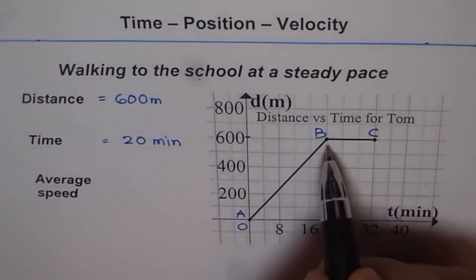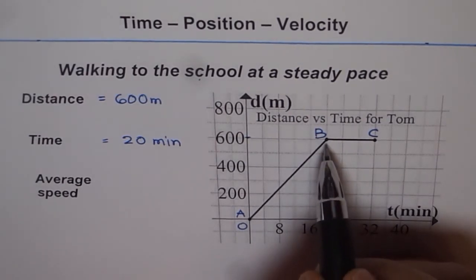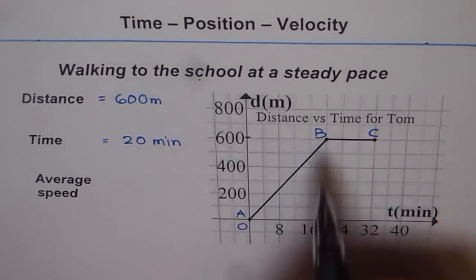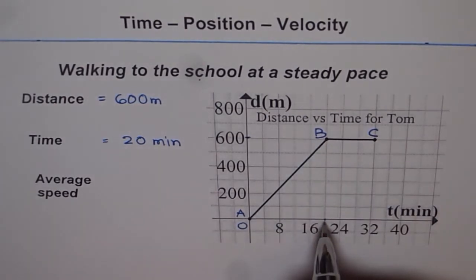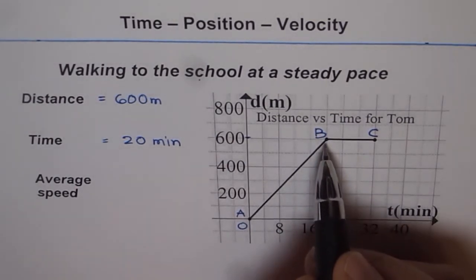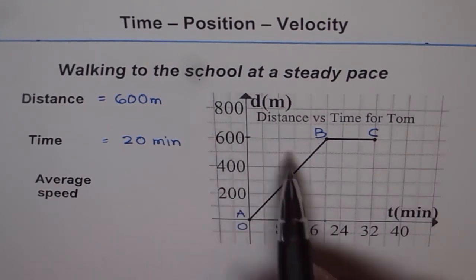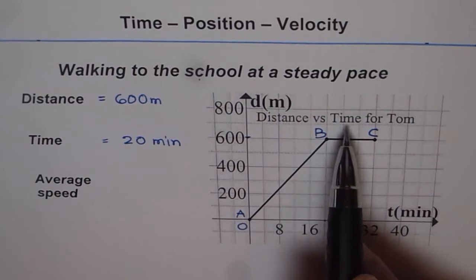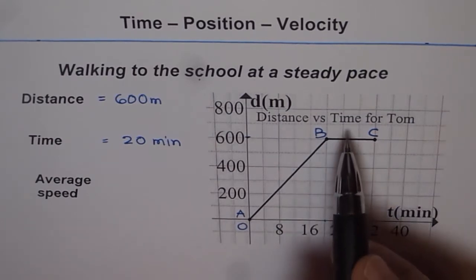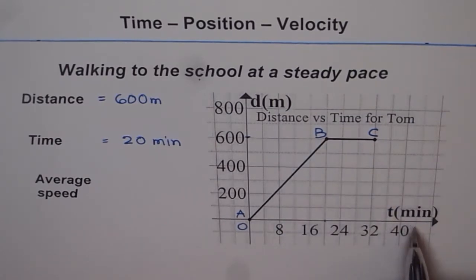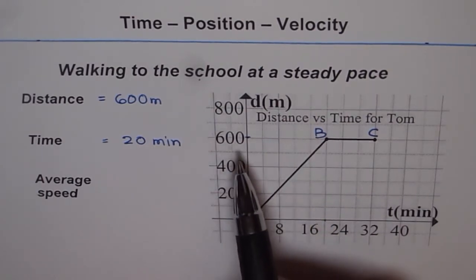Actually speaking, every point on this graph gives the position of a person. So at b the position is 20 minutes, 600 meters. So position is always given with the horizontal value and the vertical value. So by default the horizontal is x-axis and vertical is y-axis. For distance versus time, time is the independent variable which we put along the x-axis. And distance is the dependent variable which we are putting along the y-axis. And therefore we are calling this as a distance versus time graph.